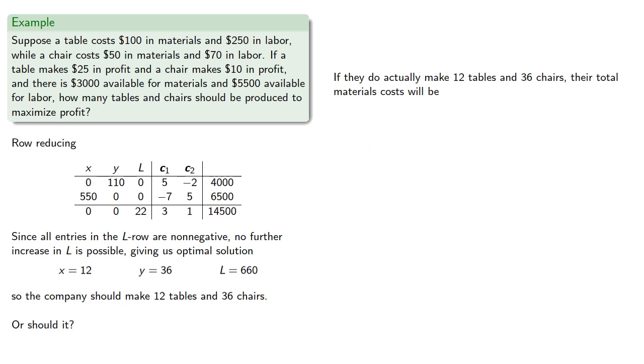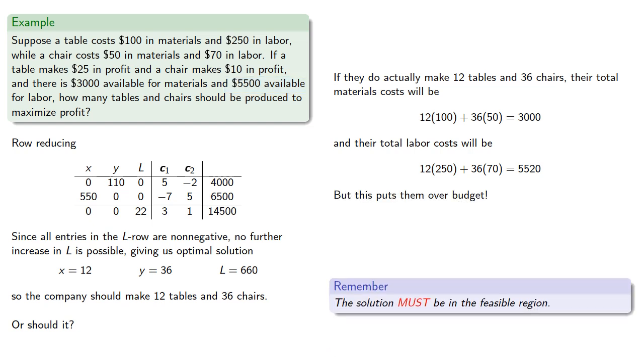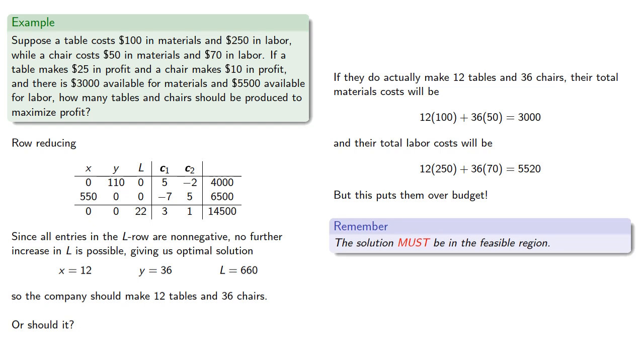Now, if they actually do make 12 tables and 36 chairs, their total materials cost will be calculated, and their total labor cost will be calculated. But this puts them over budget. It's important to remember the solution must be in the feasible region.